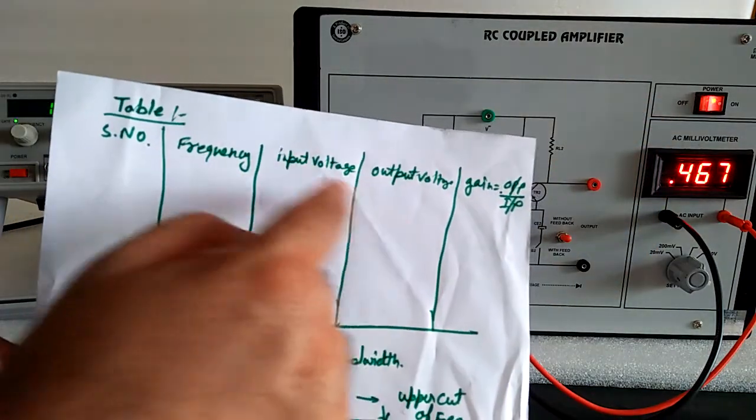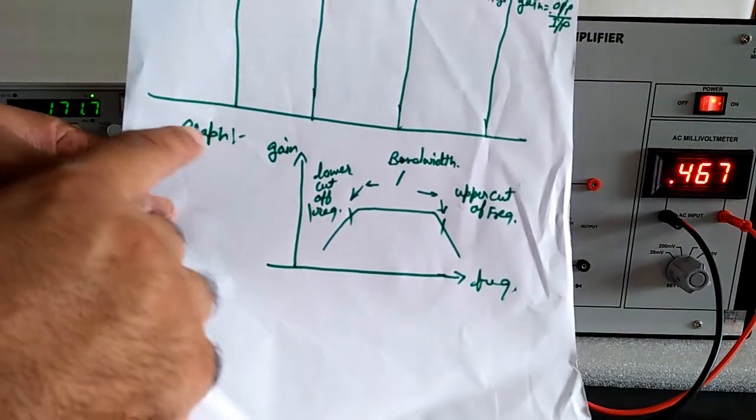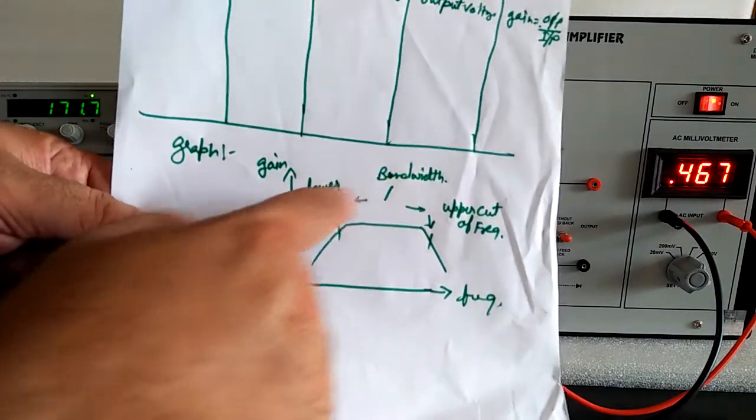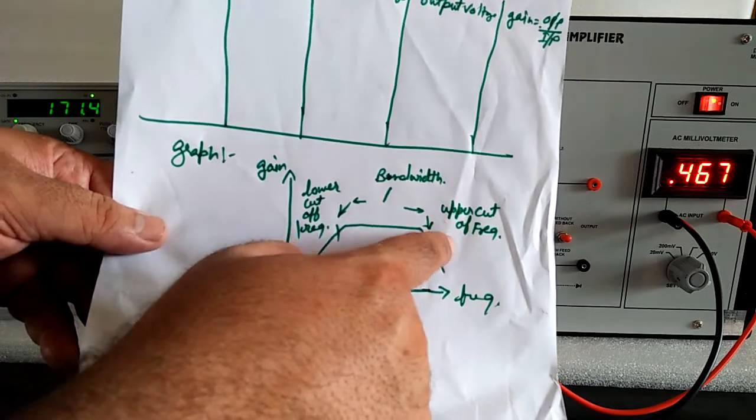And gain you have to calculate output upon input and make the graph versus gain versus frequency and calculate the bandwidth, lower cutoff frequency and upper cutoff frequency.